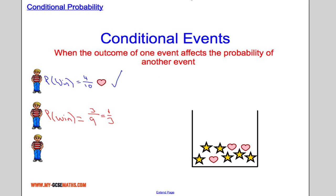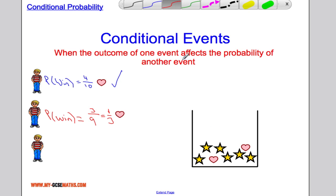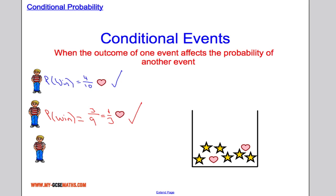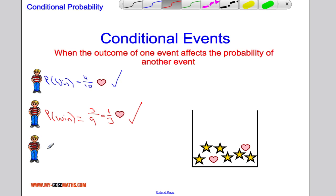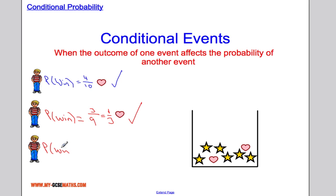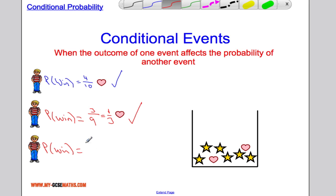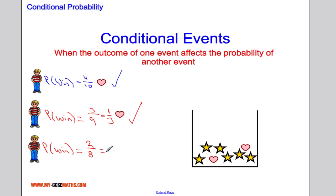Suppose contestant two also wins — he gets a heart and is happy. Now it's down to contestant three. The probability of contestant three winning has changed again: there are only two hearts left out of eight remaining objects, so he'll only win one quarter of the time.